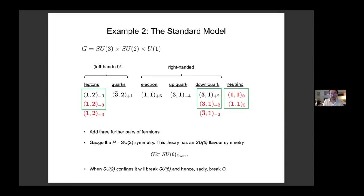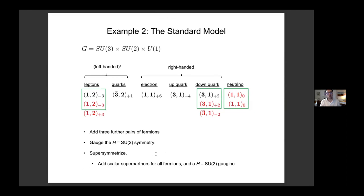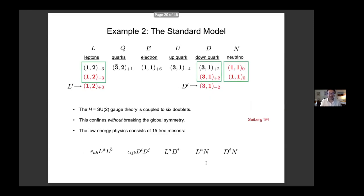There's an easy way to fix this up: supersymmetrize everything on the slide. That means adding extra scalars with the same quantum numbers as those fermions — they're charged under G but they're scalars, so there's no problem giving them a mass without breaking G. In addition, there's one extra fermion that is not charged under G but is a gaugino for H. The reason for supersymmetrization is not love of SUSY — it's because this theory is now among the class of theories that Seiberg told us how to solve in the 1990s.